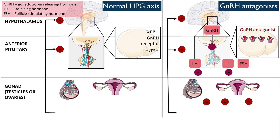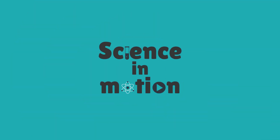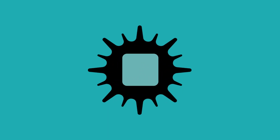Thus, negative feedback on the hypothalamus limits the production of further GnRH from the hypothalamus.